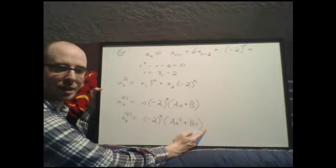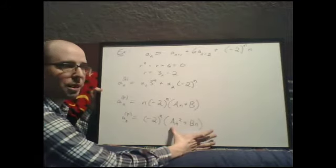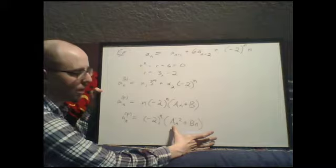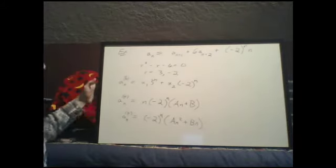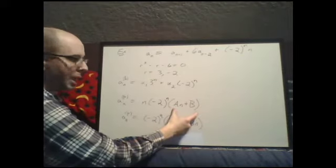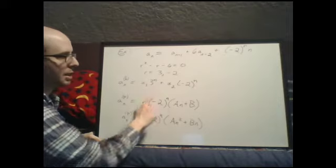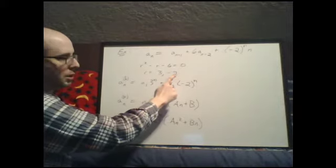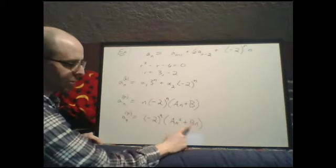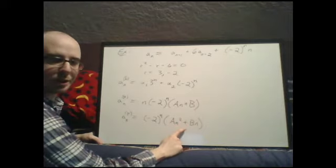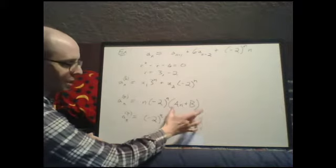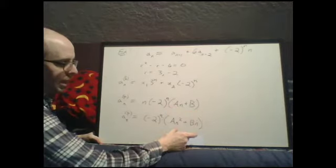To avoid like terms with the homogeneous solution, we introduce an extra n, shifting all powers up. The particular solution simplifies to negative 2 to the n times (a·n² plus b·n). Note: a common mistake is simply increasing the degree of the polynomial. Instead, you keep the same number of terms but increase each term's degree by multiplying by n to the multiplicity.